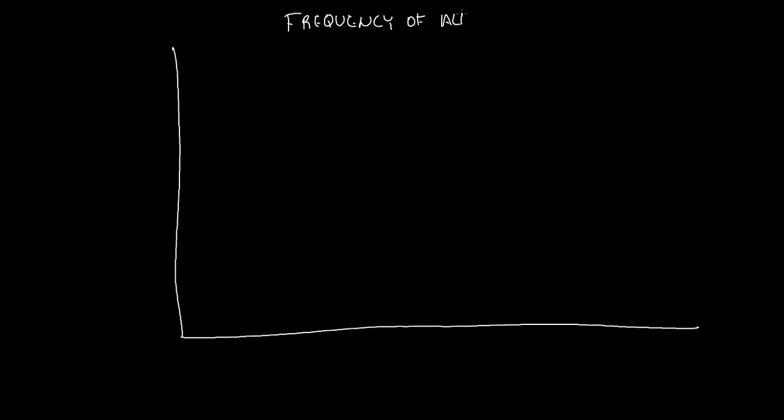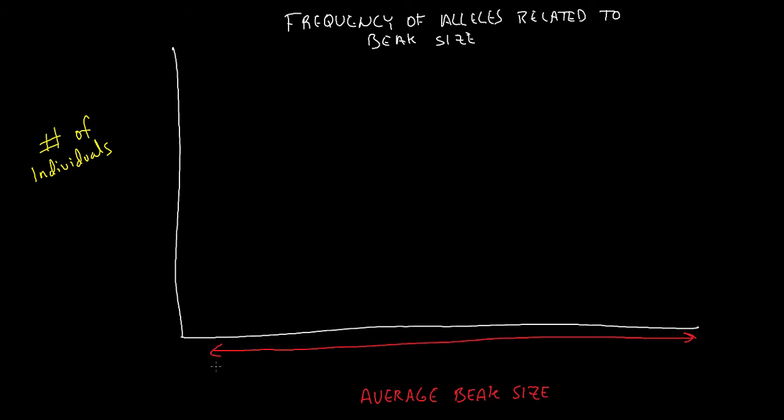We'll graph this out. And on this graph, we can show the frequency of the alleles related to beak size. On the left side, we have the number of individuals. And on the bottom, we have the average beak size.